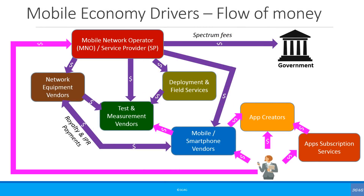I have explained this particular slide in the mobile economy video before. MNOs have to purchase or lease the spectrum from the regulatory body of the country, then purchase or lease network equipment from vendors, get into agreements with various handset suppliers, and do various testing. They are responsible for the day-to-day running of the network and would be blamed if there are any problems or if the quality of experience is not as expected.